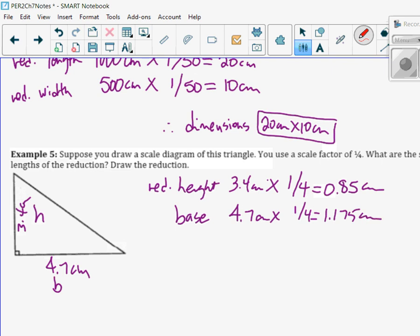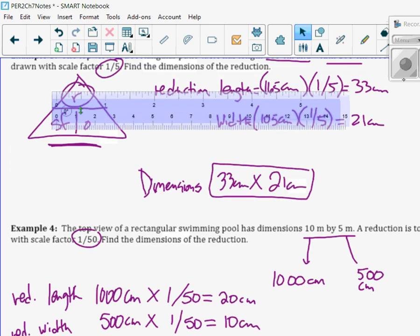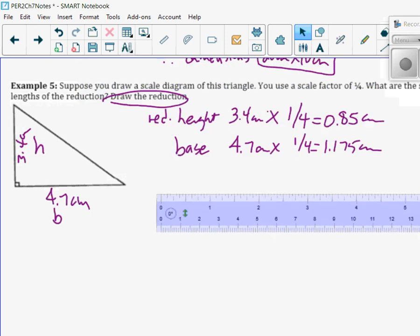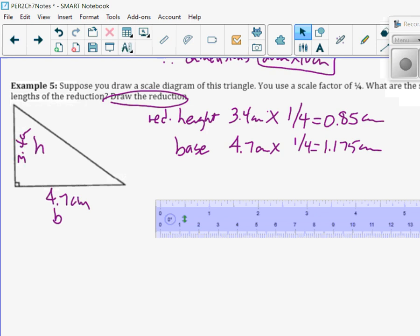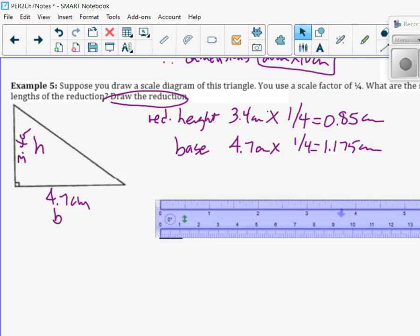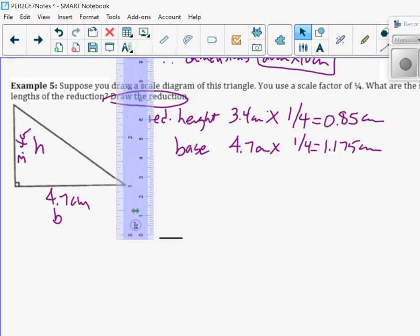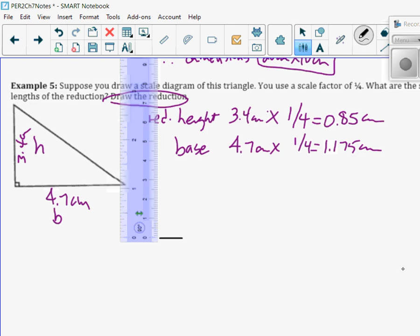Then I'm going to draw that with my ruler. I've got to draw this. This is really tiny. So my height, I'm going to do my base first since that's right there. 1.17. So 0 to 1.17. So that's almost 1.2. And then I'm going to rotate this and line it up. And this is going to be 0.85. So halfway between 8 and 9. And then we will connect it.